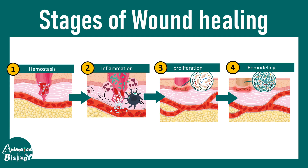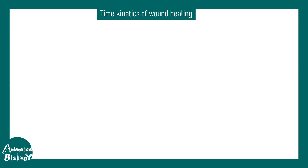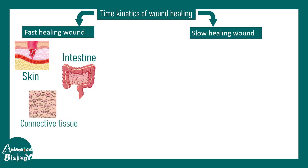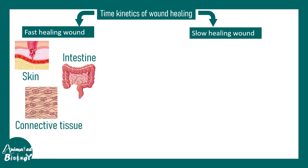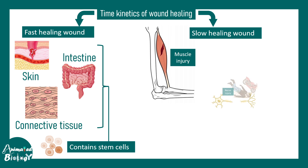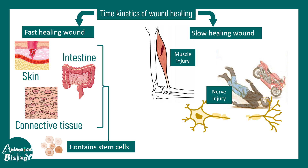In this video we'll be talking about different stages of wound healing. Wound healing has different time kinetics — different wounds heal differently. For example, there are fast healing wounds and slow healing wounds. Wounds in skin, intestines, and connective tissue heal relatively faster because they contain stem cells which can easily replenish damaged tissue, giving them high regenerative potential. In contrast, wounds in muscle or nerve don't heal very quickly and sometimes don't heal at all because of low regenerative potential.